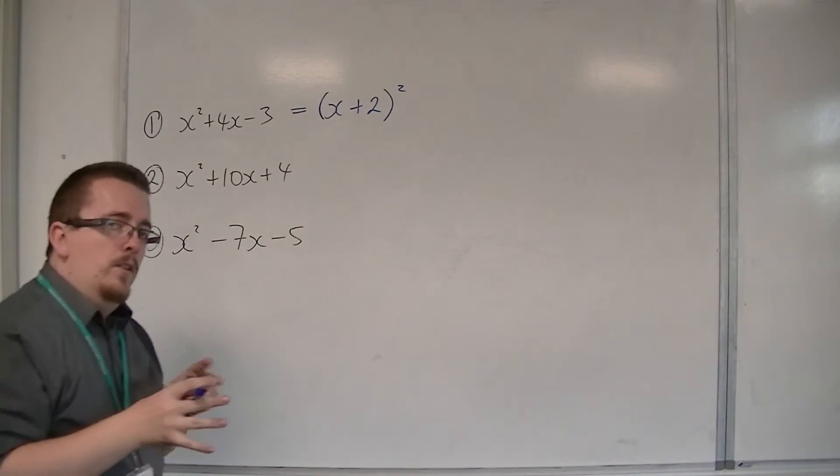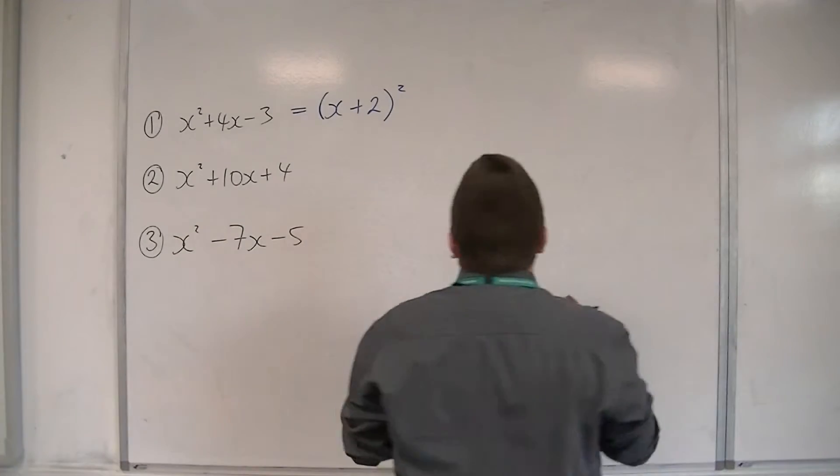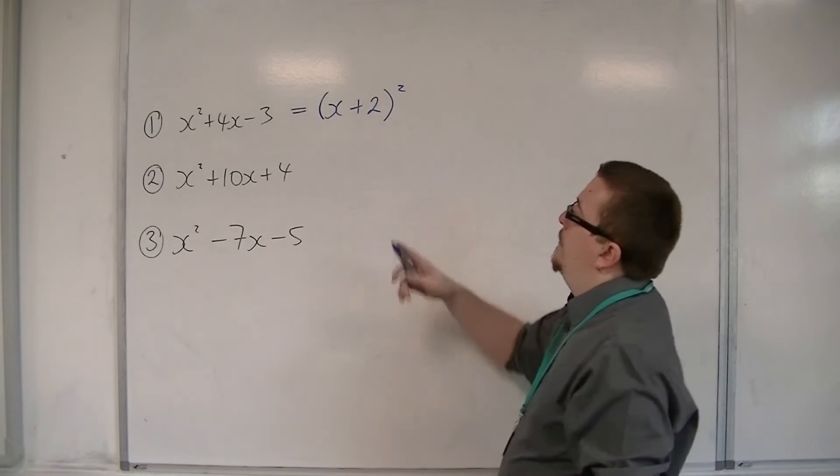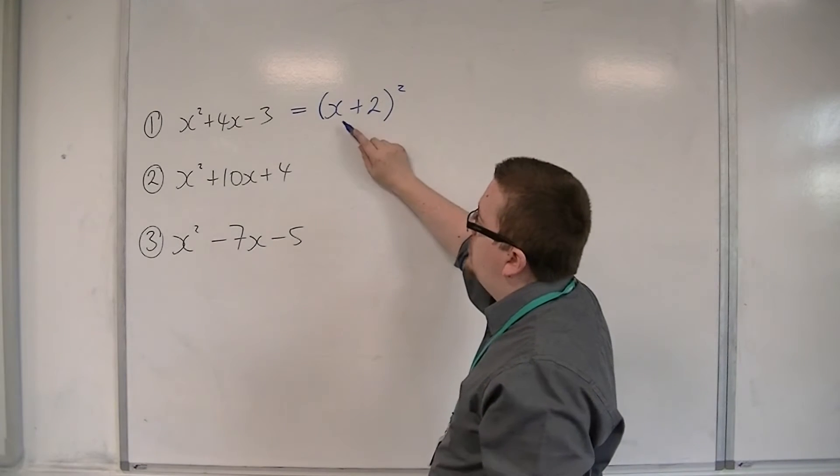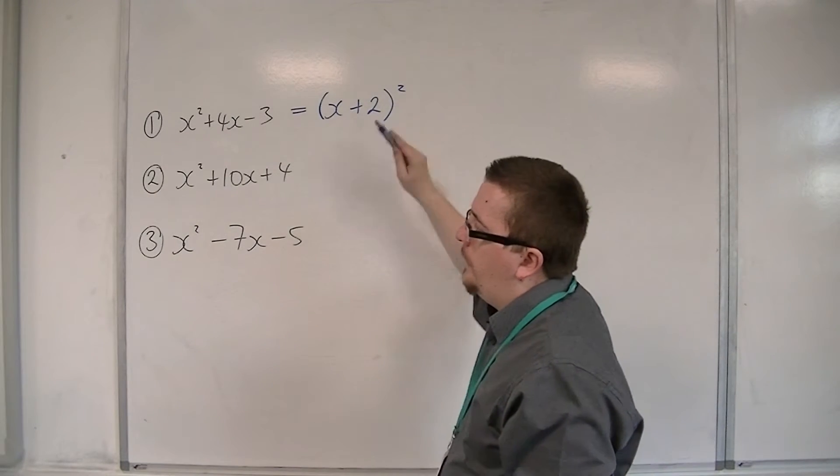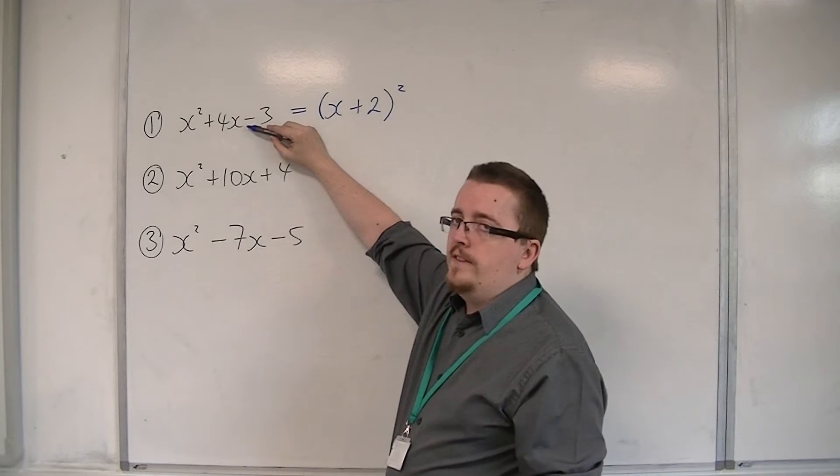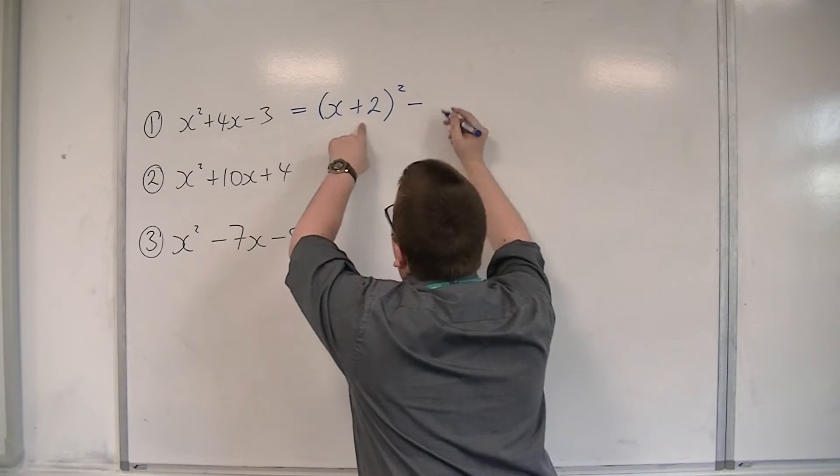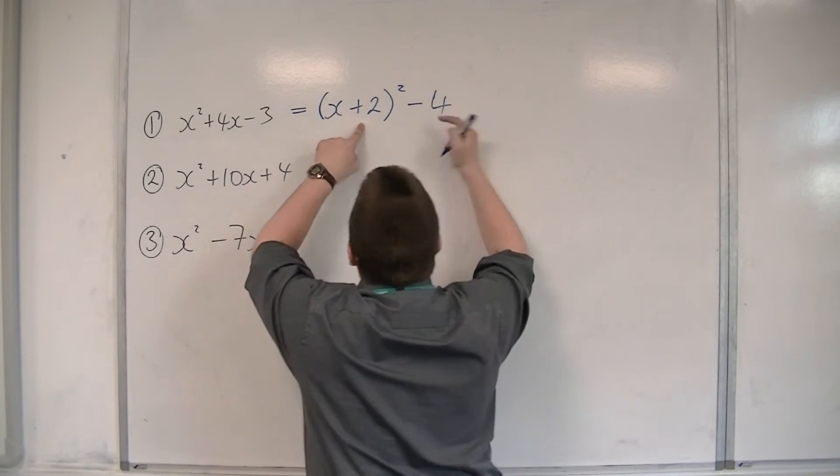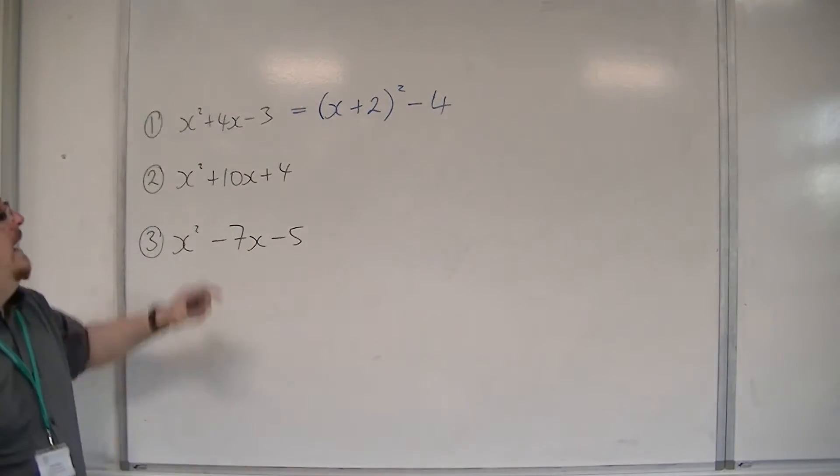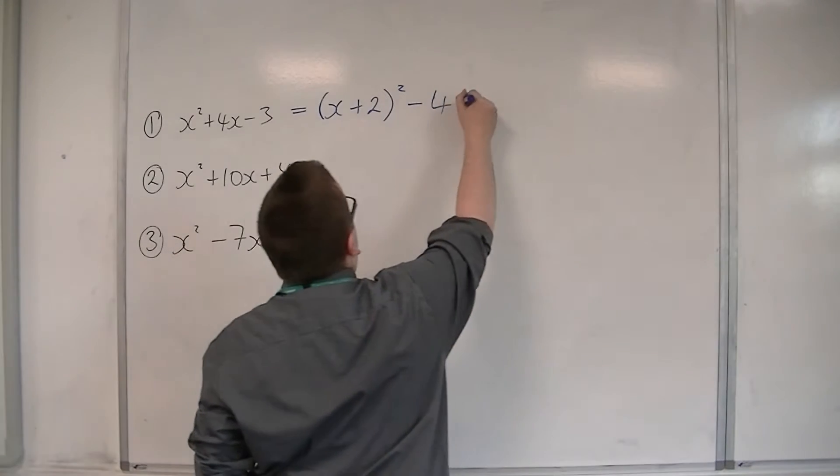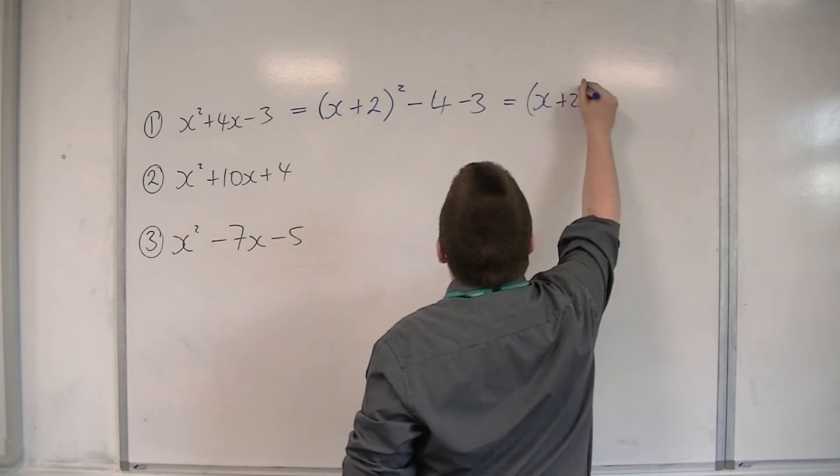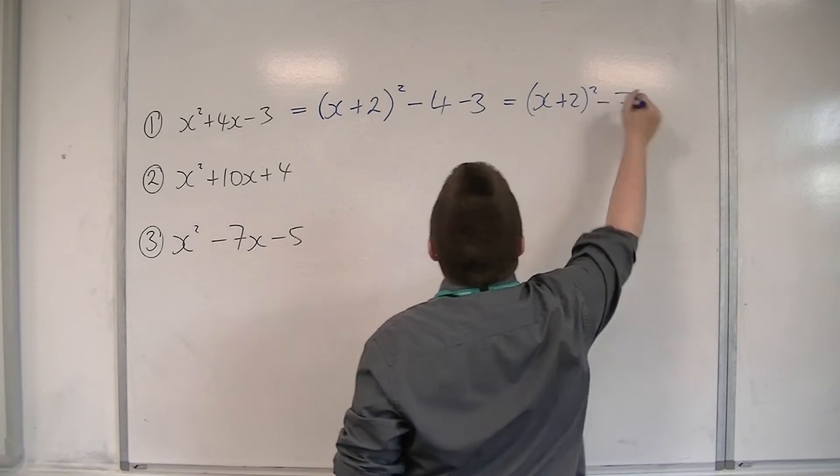I then want to counteract the expansion of that bracket. Because if I expand that, I get x squared plus 4x plus 4. And you can see that I don't want that plus 4. So I take away the square of this number. Whatever it is, I take away the square of it. And I still have that minus 3 on the outside. So I have x plus 2 all squared take away 7.